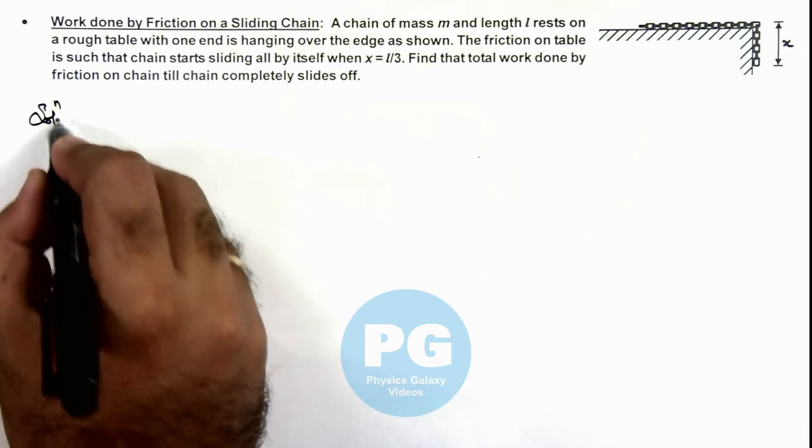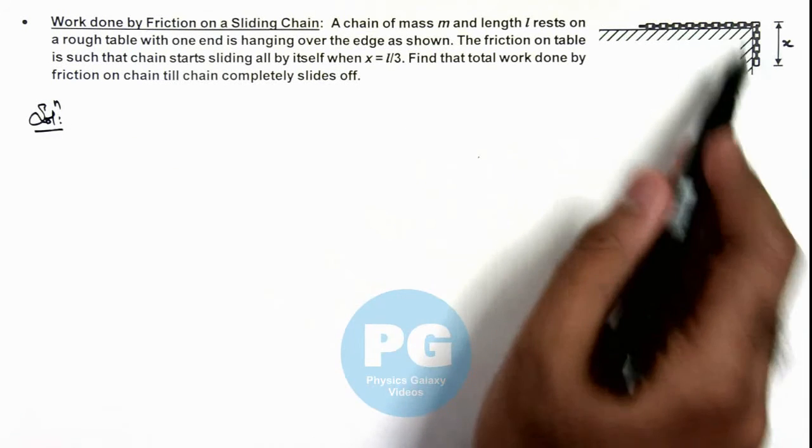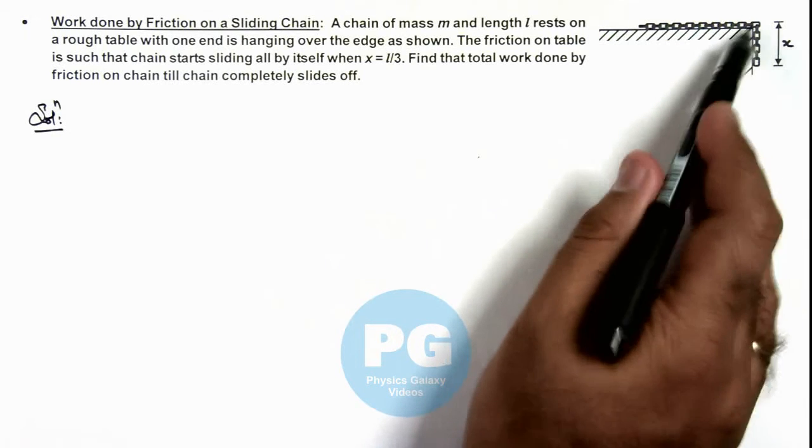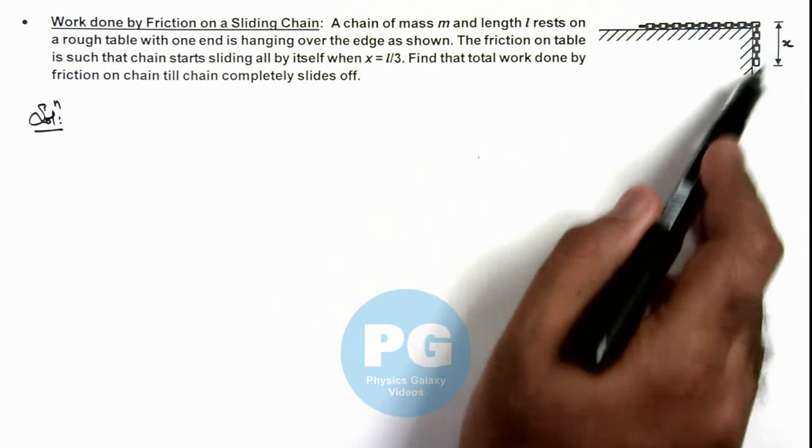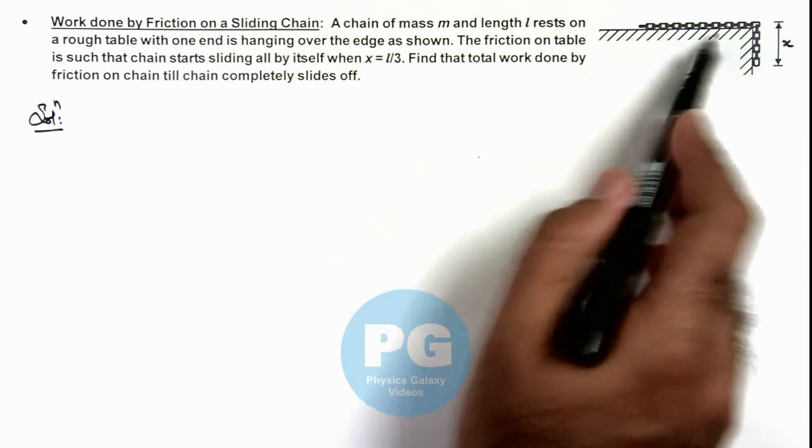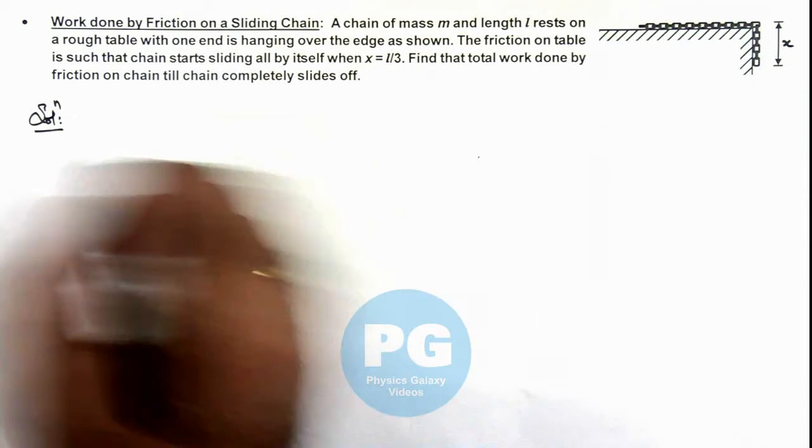Here we can see it starts sliding all by itself when one third of its length is hanging. That means the weight of this one third part exceeds the friction acting on the two thirds part. So here we can write.